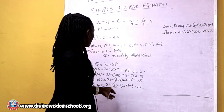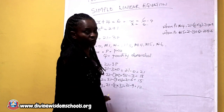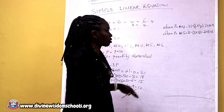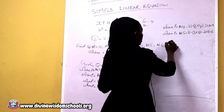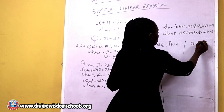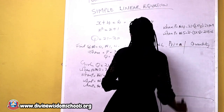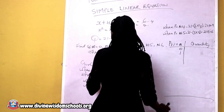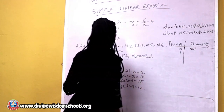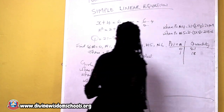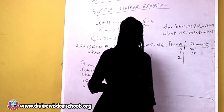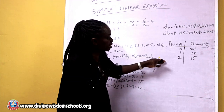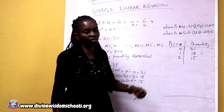Having calculated the different quantities as the price varies from 0 naira to 1, 2, 3, and so on, we are now going to put our results in the form of a demand schedule showing price and quantity. When the price was 0 naira, quantity demanded was 21. When price increased to 1 naira, quantity demanded reduced to 18. When price increased to 2 naira, quantity demanded reduced to 15. You have seen a demand schedule.